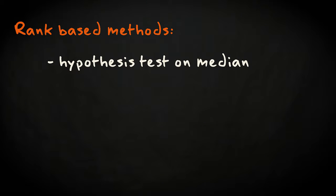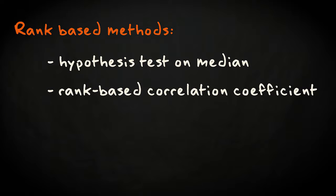With these rank-based methods, you can for example compare the estimated median based on a sample against a theoretical median, and also calculate the correlation coefficient amongst two ordinal variables. Typically, these rank-based methods are insensitive to outliers in the data. And that brings us to the next property of non-parametric techniques.